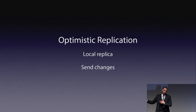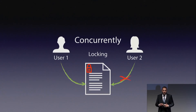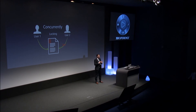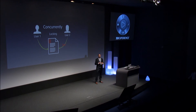Then after, you send the changes to the other people on the network. For concurrency, here I'm showing what locking looks like. Consider two users — user one and user two — who want to edit the document but are using locking.